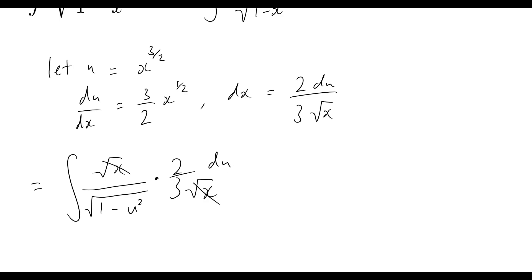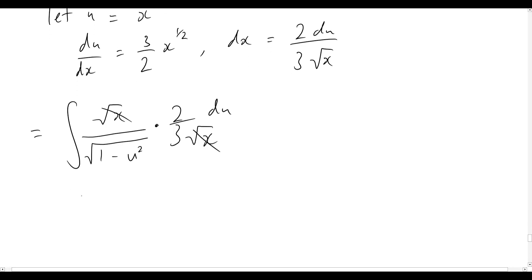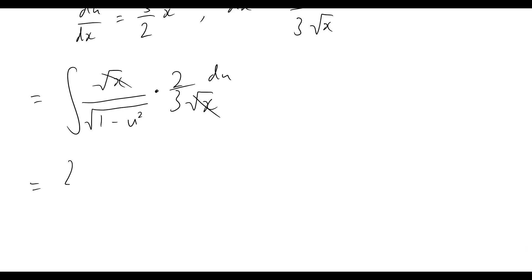Okay, so we see that the square root of x will cancel out there, and we can bring that 2/3 out the front. So now our problem simply becomes 2/3 times the integral of 1 over square root 1 minus u squared du.